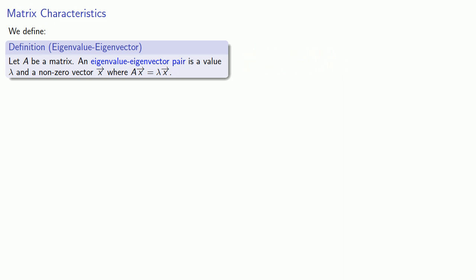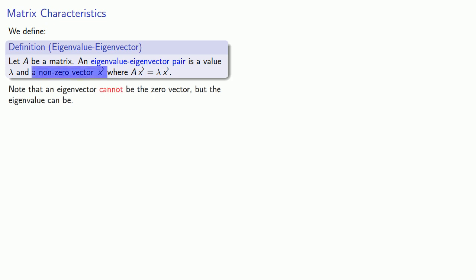It's very important to understand that the eigenvector x cannot be the zero vector. However, the eigenvalue lambda could be equal to zero. One more note: this prefix 'eigen' is the German word for 'characteristic,' because in some sense these eigenvalues and eigenvectors are characteristics of A.